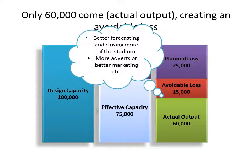Why is it avoidable? Well, if you'd done better forecasting, or maybe had more adverts, better marketing, you wouldn't have had 15,000 people non-attending — you would have had the 75,000. Or maybe if you'd closed more areas, you could have predicted that only 60,000 would come.